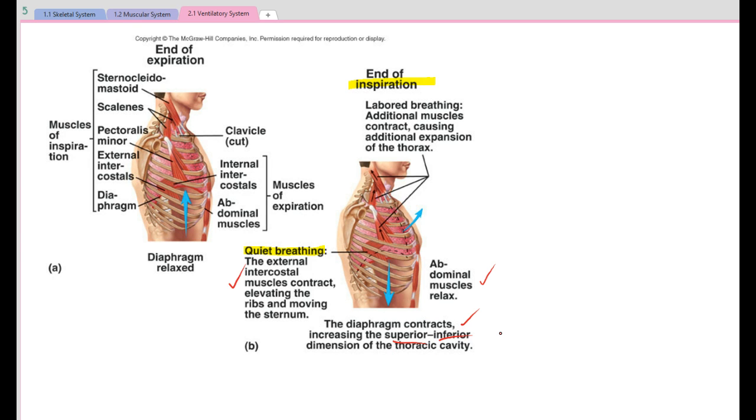So if we go back to what we mean by superior, towards the head, inferior towards the feet. So we're looking at the vertical distance of the thoracic cavity. Now as the thoracic cavity increases in size, the pressure decreases in the cavity.